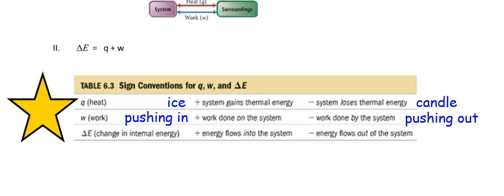If q is negative, then the system is losing thermal energy to the surroundings. For example, ice will gain energy in order to melt; a candle will lose energy and it feels warm. As far as work goes: if work is positive, work is done on the system — something is pushing in on that piston. If work is negative, work is done by the system — the piston or syringe is pushing out.